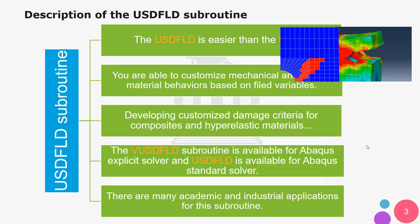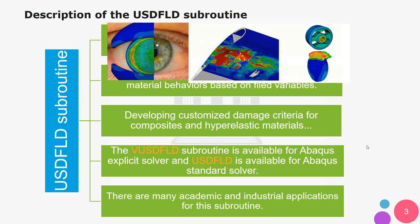Another function of the USDFLD subroutine is to help develop customized damage criteria for composites and hyperelastic materials, or define a damage criterion not already in Abaqus. In case you need to utilize the Abaqus Explicit solver in your simulation, you can use USDFLD. This subroutine can be applied to many academic and industrial projects, including various thermomechanical analyses, modeling airplane wings, and biomechanical projects.